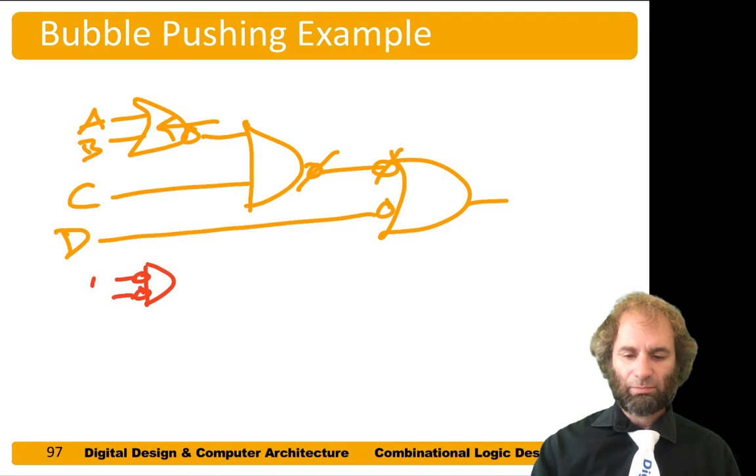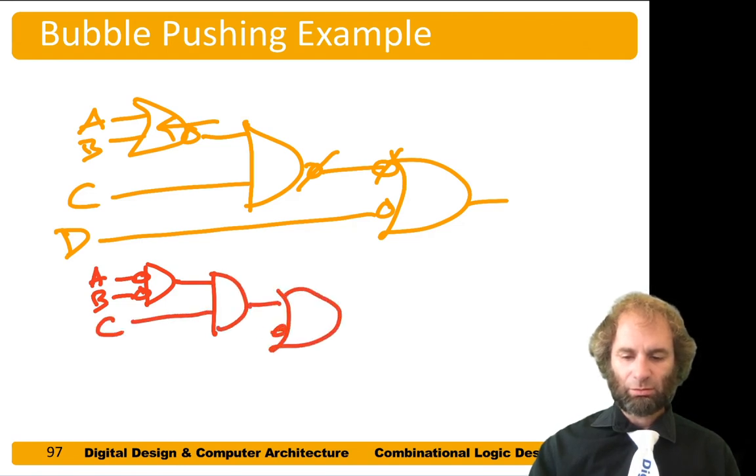Now that NOR, we're showing the bubbles on the input. Then it was AND with C OR with D. And we had a bubble. So now we can just read this off. Y equals A bar AND B bar AND C OR D bar.